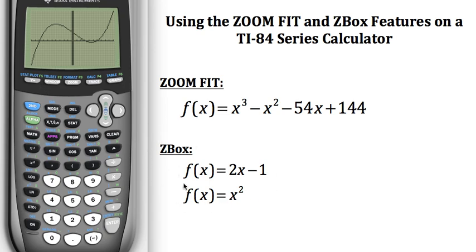Now let's take a look at the zbox equation. The equations I have set up for zbox, I'm going to go back into y equals, and I'm going to clear out that function because I no longer need that one. I'm going to deal with these two functions, f of x equals 2x minus one, and f of x equals x squared. I'm actually going to enter both of those into the calculator. So first of all, I'm going to do the 2x minus one.